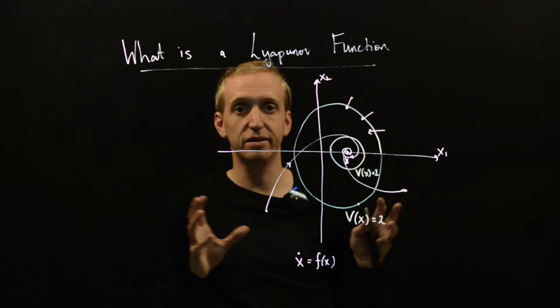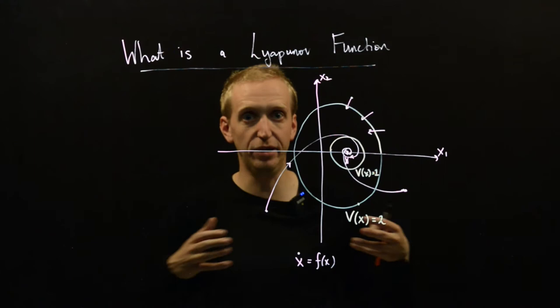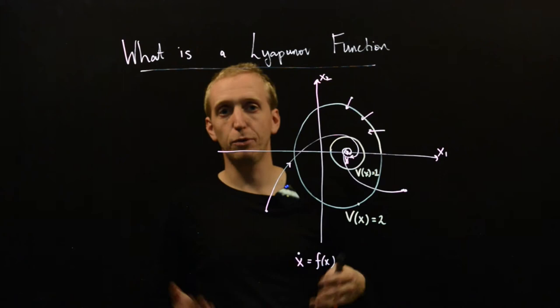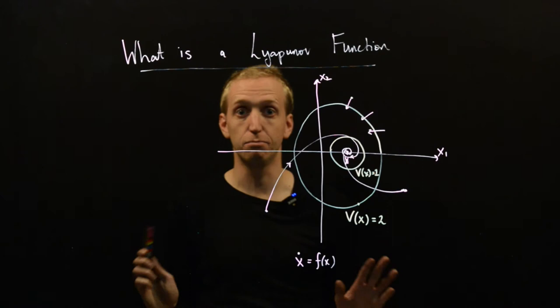and our equilibrium point corresponds to a point of zero energy, well that means that our system will always be moving to a region of lower energy, and eventually that will force us to arrive at the equilibrium point x star. And Lyapunov functions are just a way of formalizing this idea.